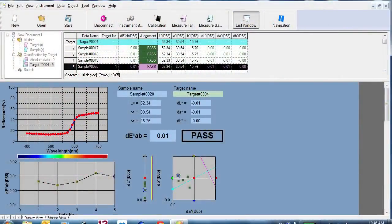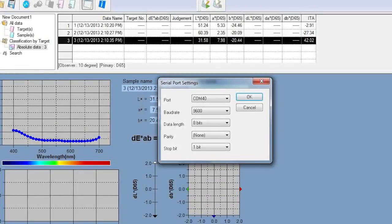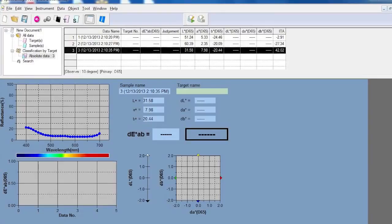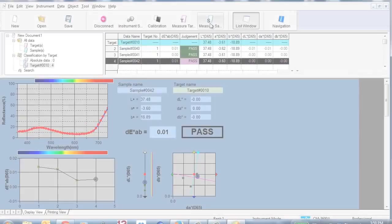Data generated from color measurement can be uploaded to a computer and evaluated in SpectraMagic NX. This software provides a more comprehensive analysis of a sample's color and is used for color quality control.